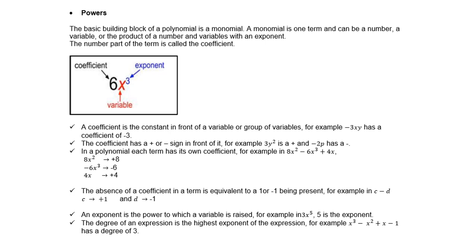A coefficient is the constant in front of a variable or group of variables. For example, -3xy has a coefficient of -3. The coefficient has a plus or minus sign in front of it. For example, 3y² is a plus and -2p has a negative.